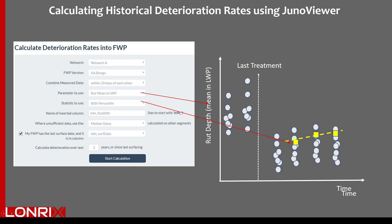JunoViewer can also use a treatment date that is expected to be in your ForwardWorks program by checking a box and selecting the column which contains the last surfacing or last treatment date, which is schematically represented by a line on the chart. JunoViewer would then go back in time and use all the data right up to that last treatment.